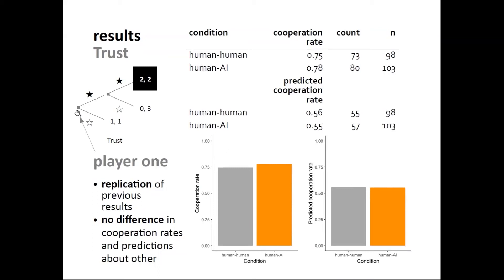Remember, if you are player one in the game of Trust, cooperation is risky because it only pays off if the other player cooperates with you. And you have no opportunity to exploit expected cooperation — you just have to take the risk of cooperating or guarantee yourself a small payoff.